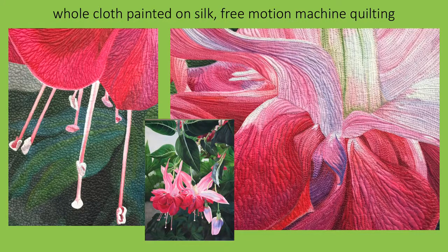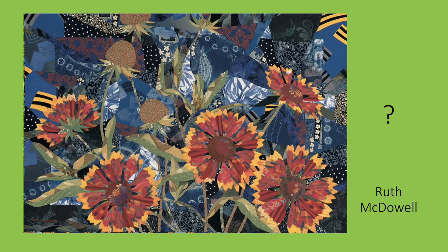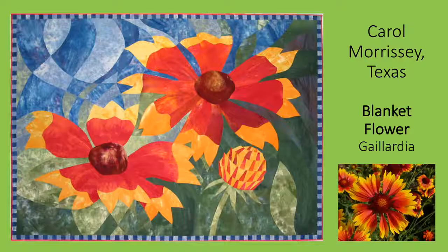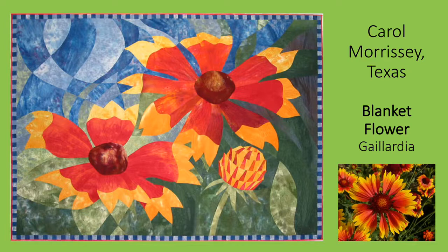The fuchsia quilt is quilted using free-motion machine quilting, which means the quilter is guiding the fabric under the needle of a sewing machine throughout the process — it may sound easy, but it definitely is not. One of the things I love about art is that it often helps you see qualities you might otherwise miss. I really love the effects of plaid used in the petals on this next quilt. I've grown coreopsis for years and initially thought it might be coreopsis, but I then found a blanket flower quilt by Carol Morrissey and realized that the flowers in Ruth McDowell's quilt were, in fact, a blanket flower. I had grown blanket flowers but never really focused on the forked nature of the petals until I saw them made a focal point in this quilt.